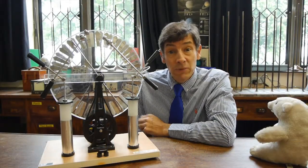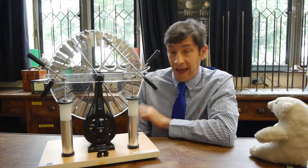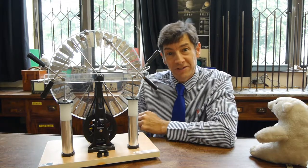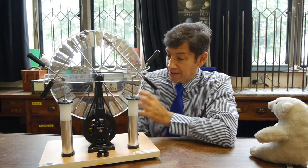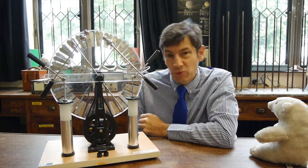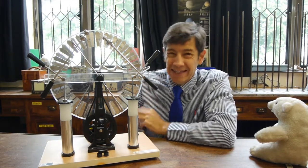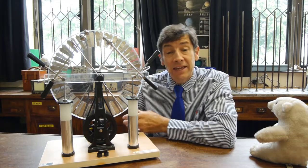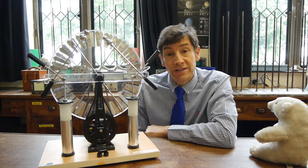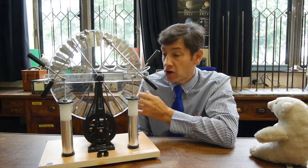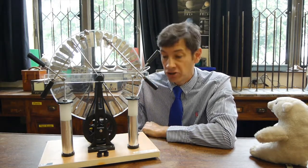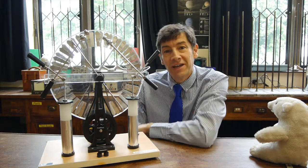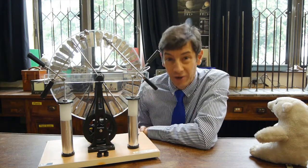So you might all be familiar with the Van de Graaff generator, and this is a piece of apparatus that comes from the same sort of area of physics: electrostatics. The Wimshurst machine was made by James Wimshurst in about 1880. It's an electrostatic generator that uses electrostatic induction to generate huge charges on these Leyden jars and then it will throw really large sparks.